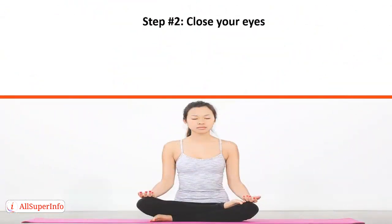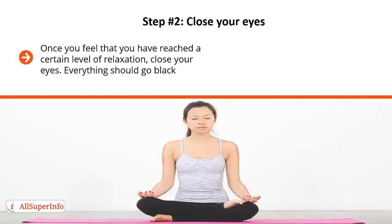Step number two: close your eyes. Once you feel that you have reached a certain level of relaxation, close your eyes — everything should go black. Allow yourself to relax even deeper. Allow yourself to slow your thoughts down. Just focus on the calmness of the darkness. There's nothing to prove here. You don't have to be somebody that you're not. You have nobody to impress. This is just you and your thoughts — just calm, pure darkness. No light, no color, nothing to get worked up about.